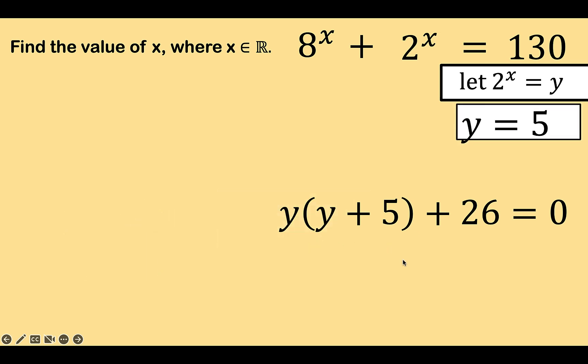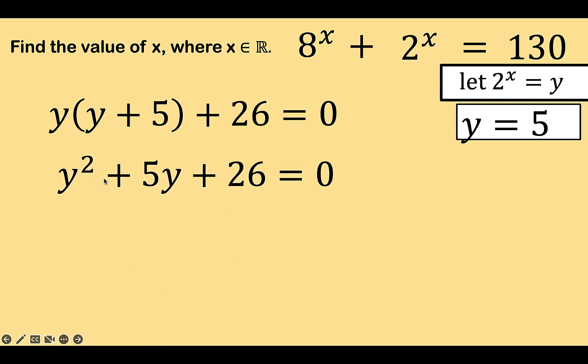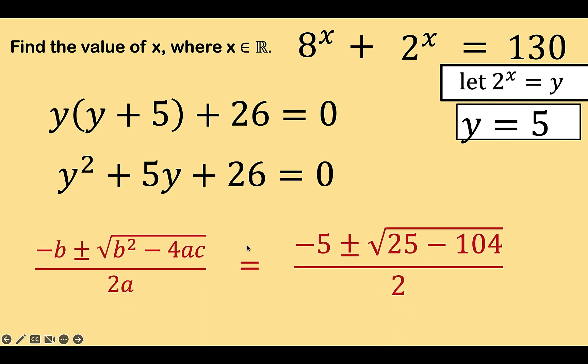Let's deal with the second equation. Let's distribute y to this binomial to arrive at y squared plus 5y and copy all the rest. This is now a quadratic equation that we can solve using the quadratic formula. And substituting now 1 for a, 5 for b, and 26 for c, we now arrive at this value.